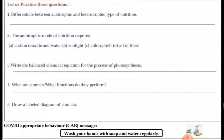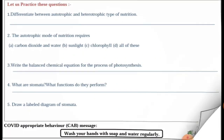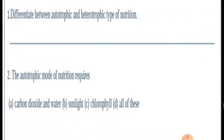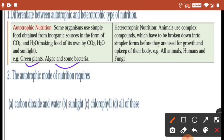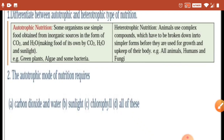Let's move on. The question is: differentiate between autotrophic and heterotrophic nutrition. Autotrophic nutrition — some organisms use simple food obtained from inorganic sources in the form of carbon dioxide, water, and sunlight. Examples: green plants, algae, and some bacteria. Heterotrophic nutrition — animals use complex compounds. Examples: all animals, humans, and fungi.